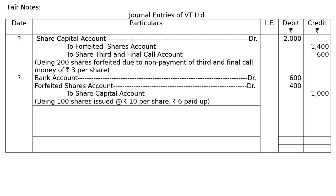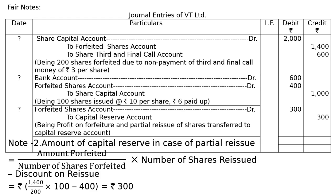Entry 2 — Reissue: Bank Account debited 100 × ₹6 = ₹600. Forfeited Shares Account debited 100 × ₹4 = ₹400 (discount on reissue). To Share Capital Account: 100 × ₹10 = ₹1000, fully called up. Narration: 100 shares issued at ₹10 per share, ₹6 per share received.